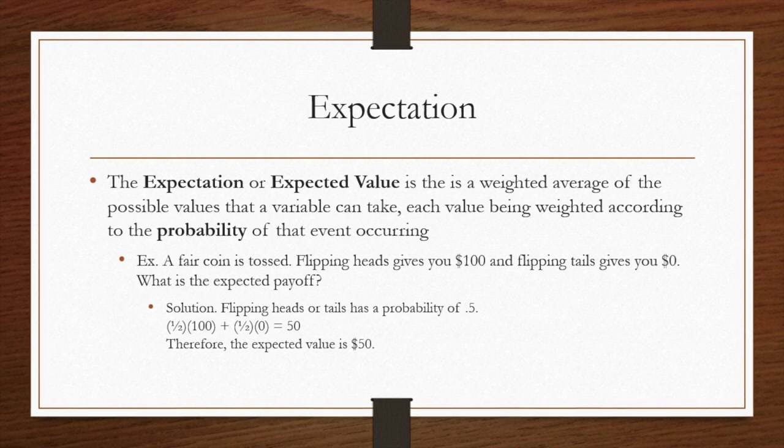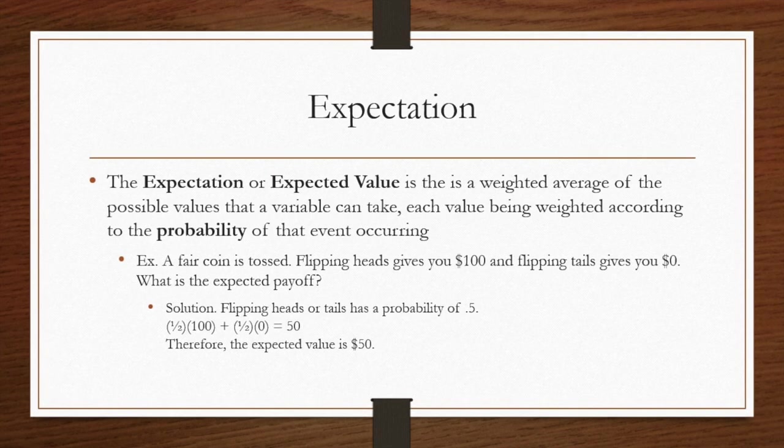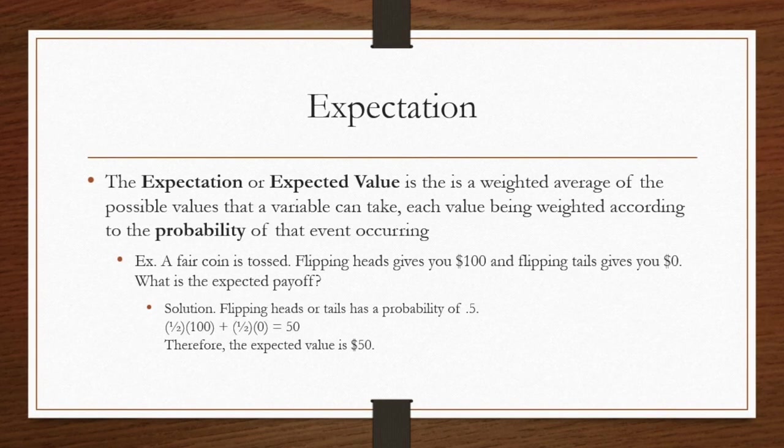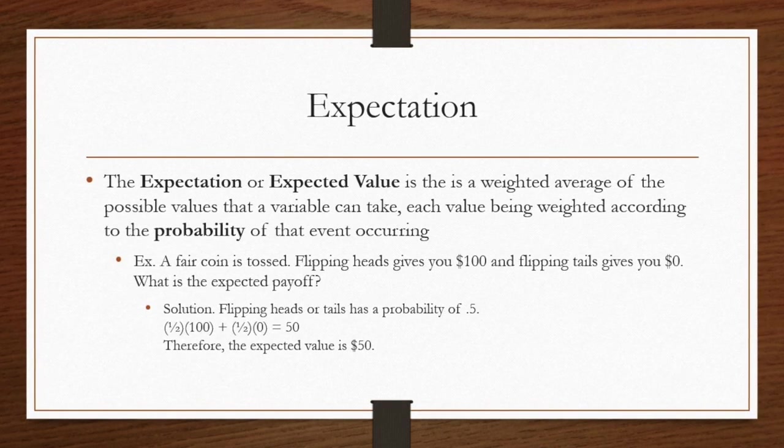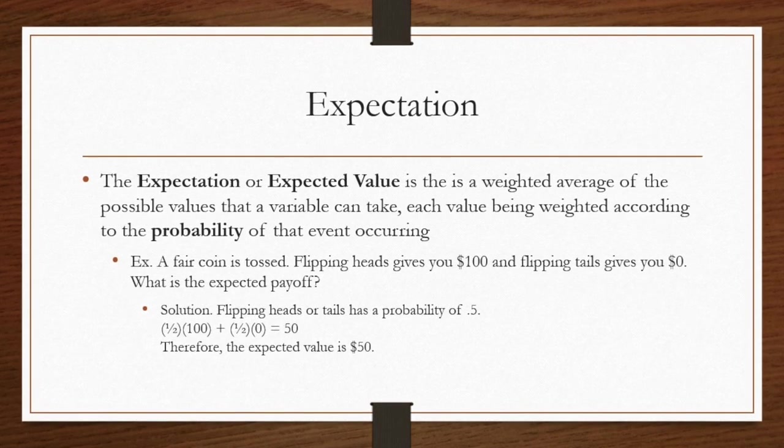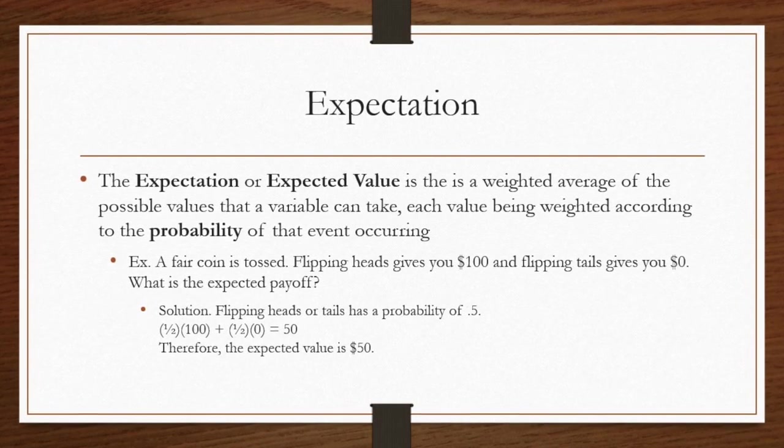Expectation allows us to predict the expected outcome of an experiment. Formally, it is the average of the possible values a variable can take. These values are weighted according to the probability of that event occurring. Again, this can be modeled through the coin flip example.